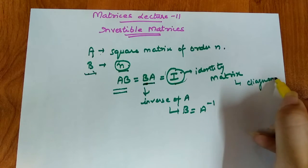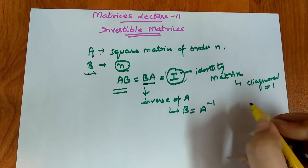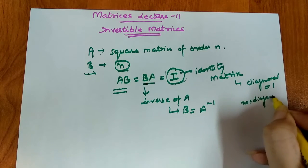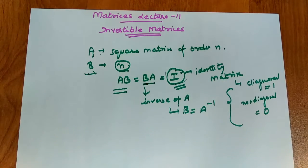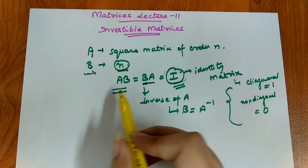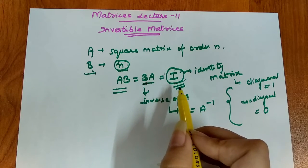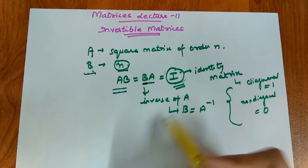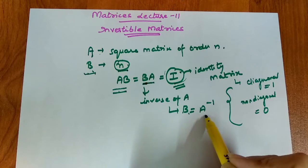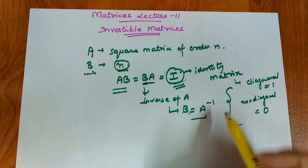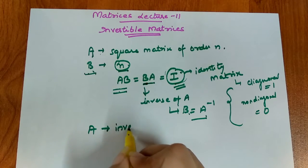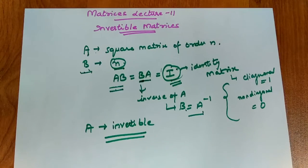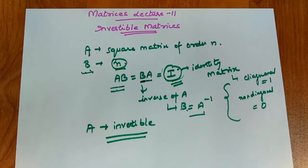And the non-diagonal elements are equal to zero. So this is the identity matrix. If AB is equal to the identity matrix, then we have our inverse matrix, which we usually denote as A inverse. And in this case, if this condition happens, our matrix A is invertible. Let's consider one example to quickly understand invertible matrices.